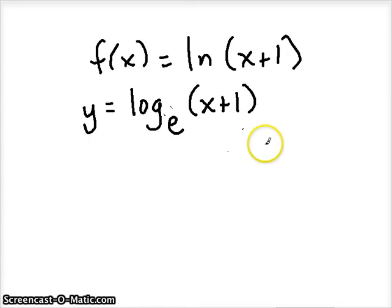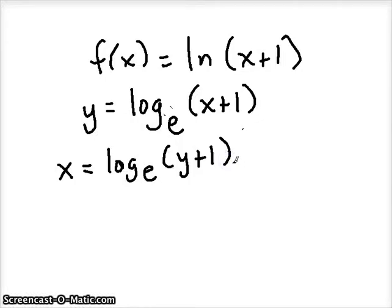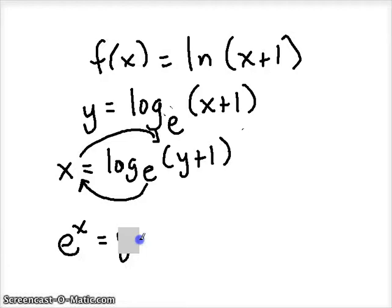Okay. Now we're ready to swap x and y. Say x equals log base e of y plus 1. And now we can use our circle method to rewrite it in exponential form and finish our solution here. So we've got e to the x, so come back around to the other side, equals y plus 1.